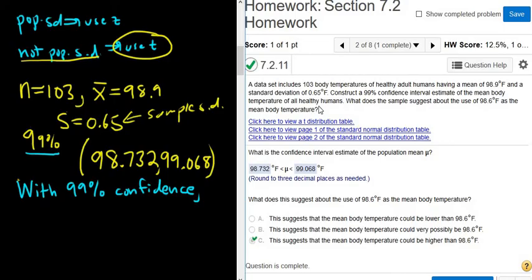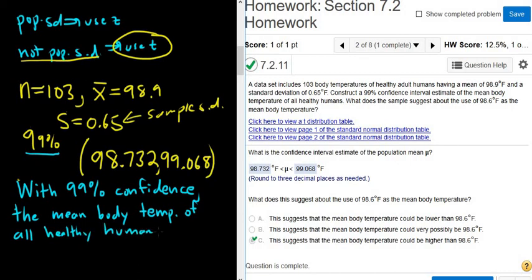So we're talking about the mean body temperature of all healthy humans. So you would say the mean body temperature of all healthy humans. And then you always say is between. And then you go to your answer. So 98.732 and 99.068.